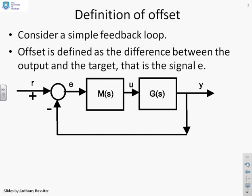Just a reminder of how the offset is defined, and we're only going to use a simple feedback loop. If you want to do slightly more involved loops, we'll leave that to private study. The offset is defined as the difference between the output Y and the target R. Because we've got a summing junction, the offset is this signal here, E.